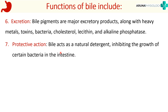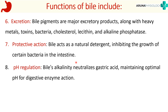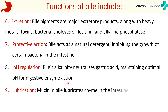Bile has a protective function because it acts as a natural detergent, inhibiting the growth of certain bacteria in the intestine. It also helps in pH regulation because bile is an alkaline fluid — its alkalinity can neutralize gastric acid, maintaining the optimum pH for digestive enzyme action. Finally, mucin in bile lubricates the chyme in the intestine.